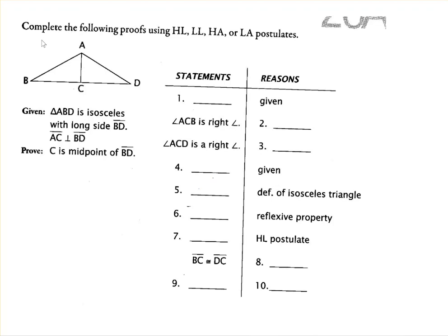If you look at the directions for this proof — and they're going to apply to all of the proofs in this week's lessons — you are asked to complete the following proofs using the hypotenuse-leg, leg-leg, hypotenuse-angle, or leg-angle postulates. We just talked about how these postulates refer specifically to right triangles.